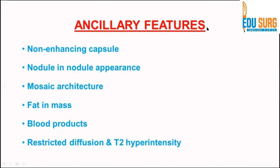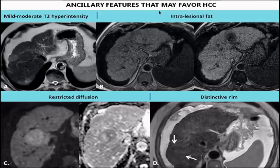Ancillary features supporting the diagnosis of HCC according to LI-RADS include: capsule without enhancement, nodule-in-nodule appearance, mosaic architecture due to fat or hemorrhage, multiple nodules within a single lesion, fat in the lesion, blood products within the lesion, restricted diffusion, and T2 hyperintensity. Here we can see mild to moderate T2 hyperintensity, and in the in-phase image the lesion is bright, while on the out-of-phase image it is completely suppressed, indicating fat content. Restricted diffusion and a distinctive rim also support the diagnosis of HCC.